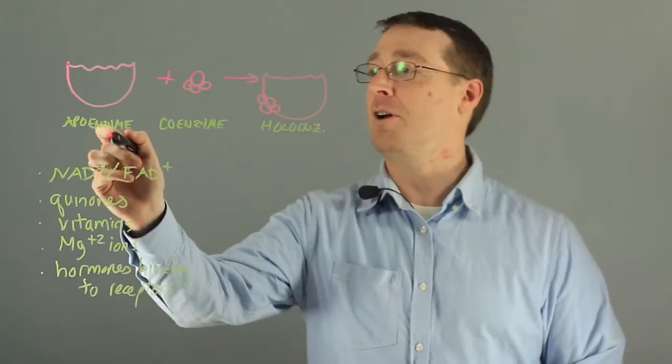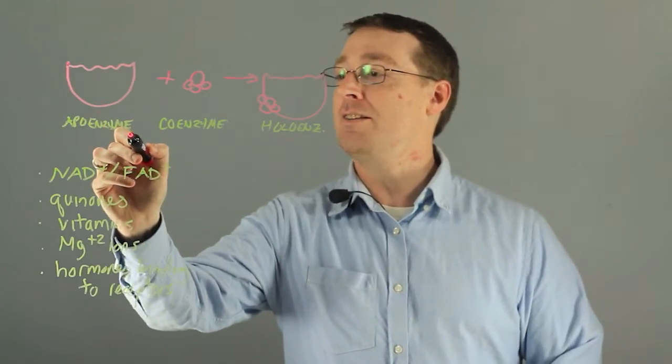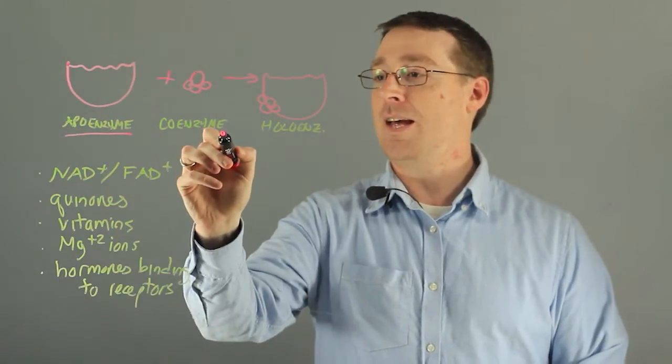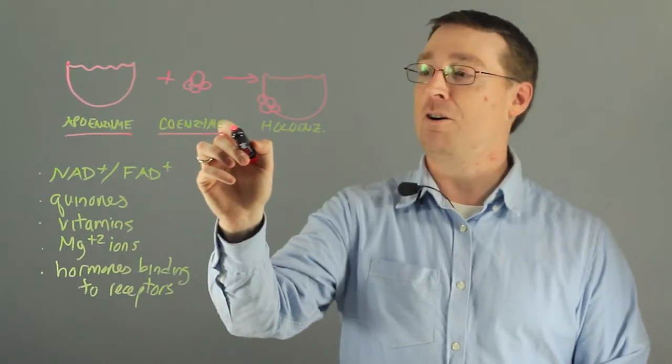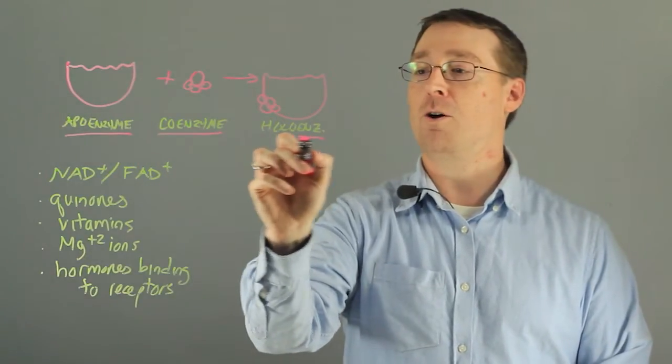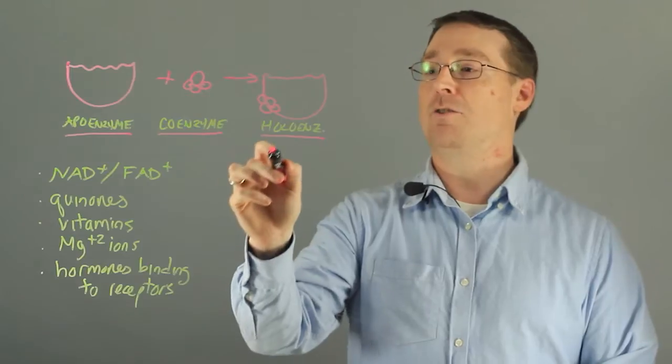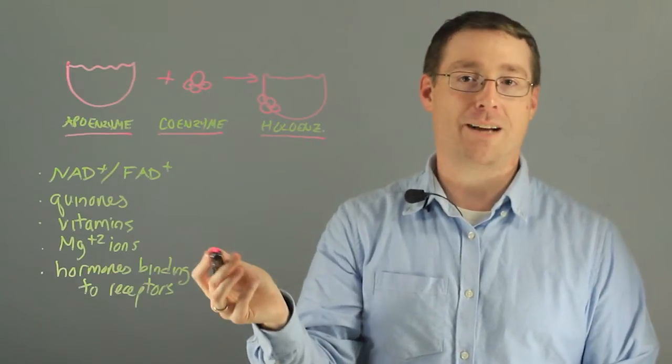That's shown here in this diagram in which the enzyme alone is called the apoenzyme and that interacts with the coenzyme to form a holoenzyme, and holoenzymes are then able to perform catalysis.